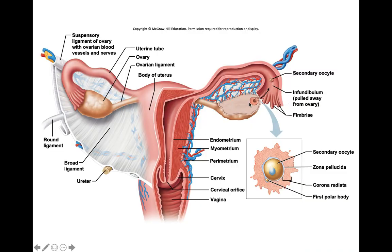Going back to the cartoon picture: ovulation occurs, and the secondary oocyte gets released. These little finger-like projections are called fimbriae; they do a sweeping motion to draw the oocyte into the uterine tube. This first funneled portion of the uterine tube is called the infundibulum. The oocyte then travels into the dilated, bubbled-up region called the ampulla—if fertilization takes place, it usually happens in the ampulla. The last portion before the uterus is called the isthmus of the uterine tube. The uterine tube's main function is to convey the oocyte to the uterus.